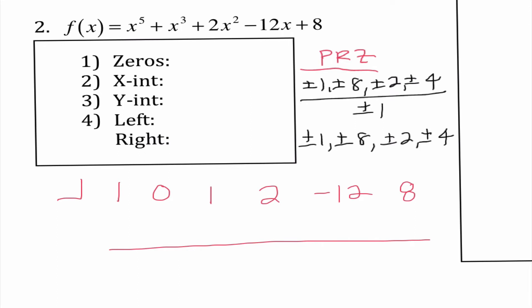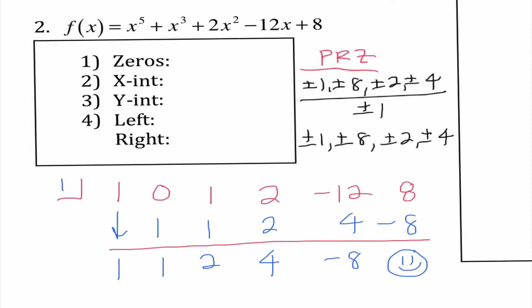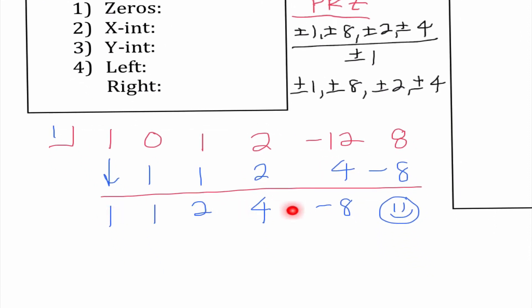I'm going to try 1 first — I like simple math. Bringing down my 1: 1 times 1 is 1, I get 1; 1 times 1 is 1, I get 2; 2 times 1 is 2, I get 4; 4 times 1 is 4, I get negative 8; negative 8 times 1 is negative 8, so I get 0 — we have a winner. Now at this point this new polynomial is to the fourth degree, so I'm going to keep going. Why don't we try negative 2?